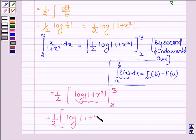|1+3²| minus the value of this function at the lower limit, which is log|1+2²|].